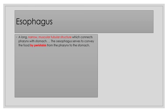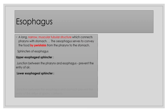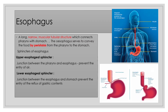Once the bolus passes through the pharynx, it reaches the esophagus — the tubular organ which transports food to the stomach via peristalsis. Peristalsis is the contraction and relaxation of the pipe-like structure which moves food downward into the stomach. The upper esophageal sphincter represents the junction between the pharynx and esophagus and prevents entry of air, while the lower esophageal sphincter prevents reflux of gastric content back towards the esophagus.